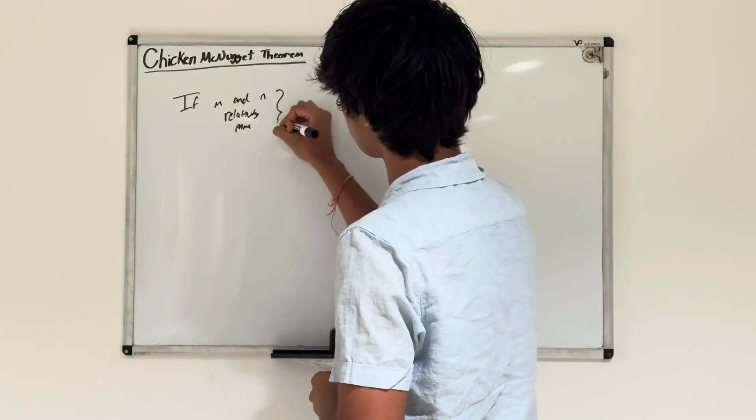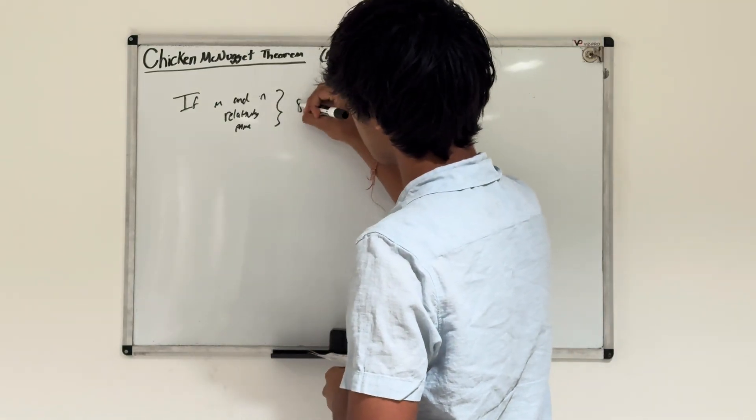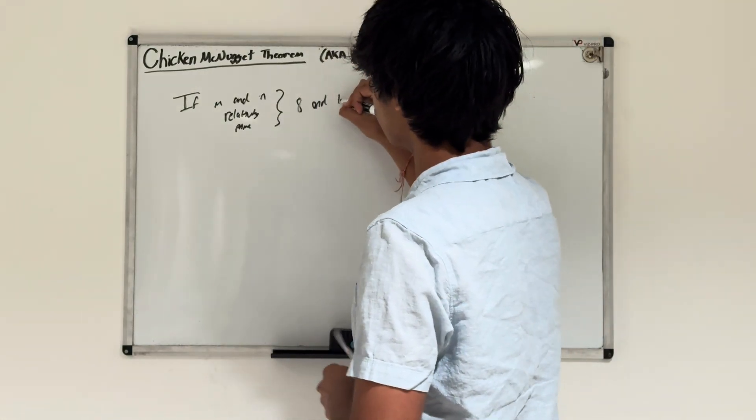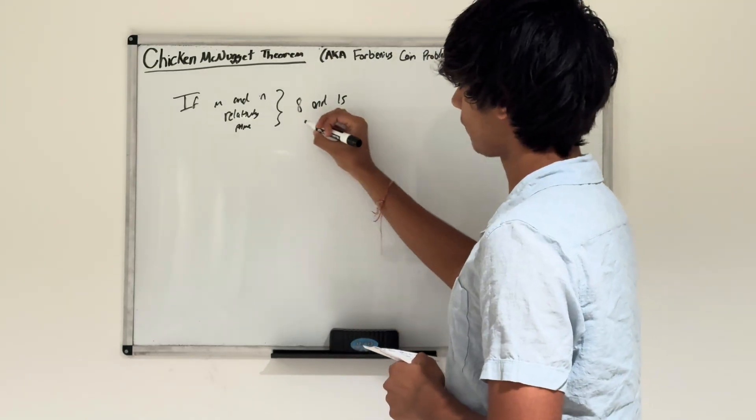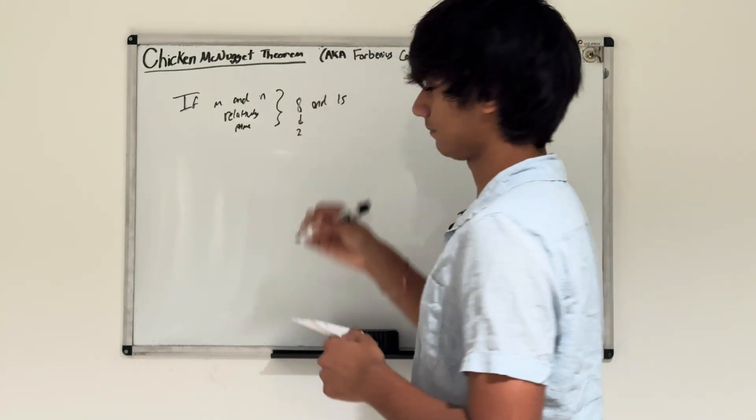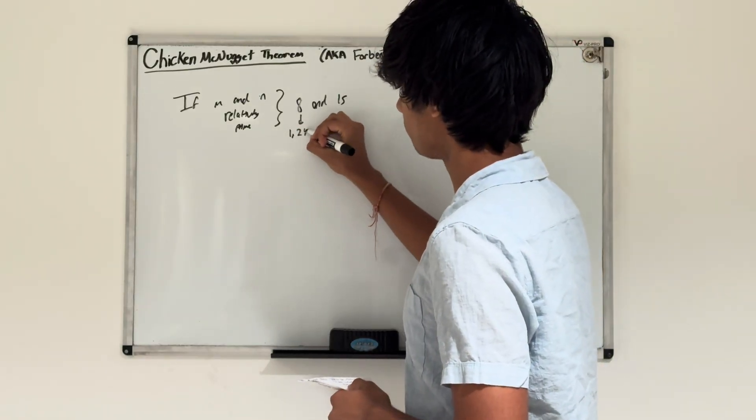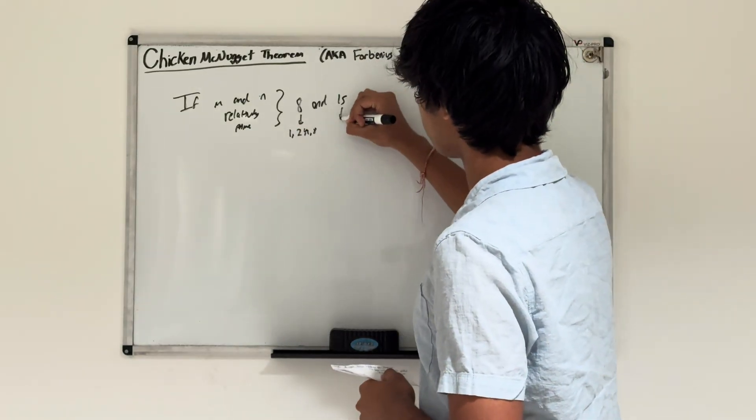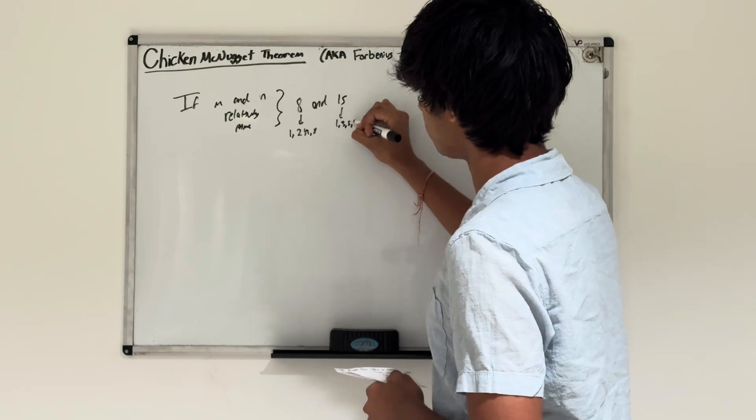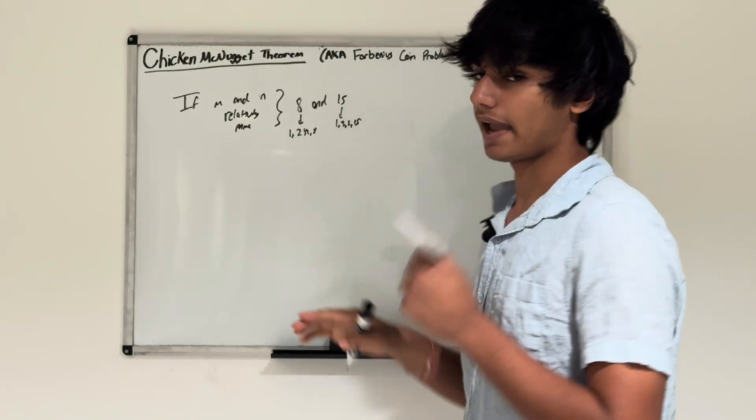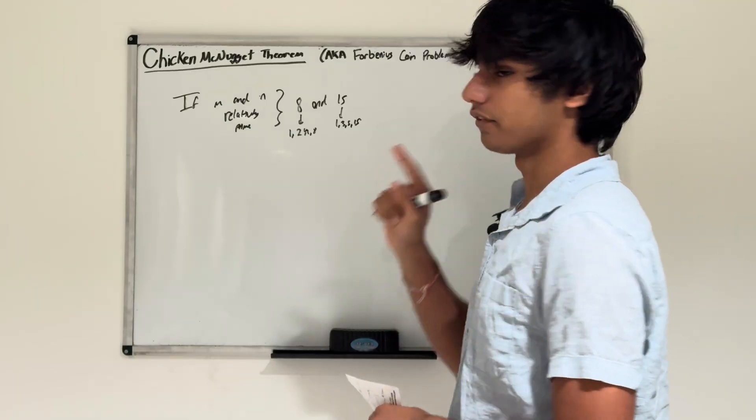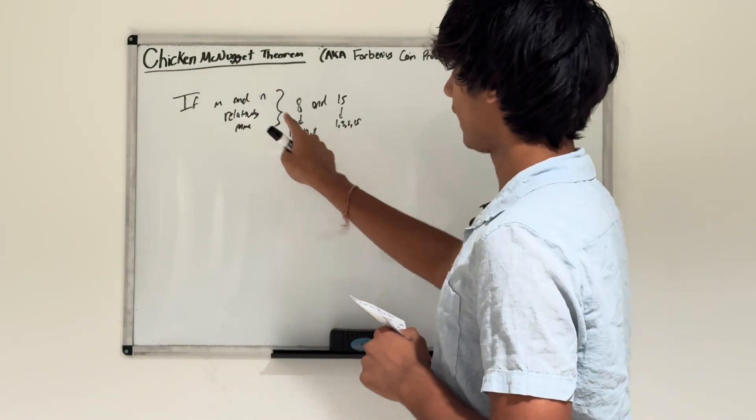that are relatively prime - so relatively prime means they don't have any factors other than one. For example, eight and fifteen are relatively prime because the factors of eight are 1, 2, 4, 8, and the factors of fifteen are 1, 3, 5, 15. These two don't share any factors together, so we can consider eight and fifteen to be relatively prime.